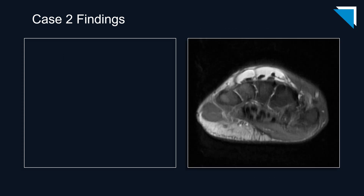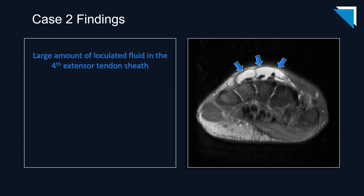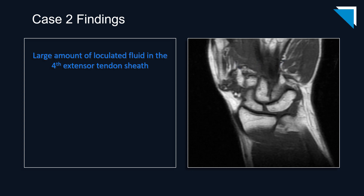Let's review our findings on this axial fluid-sensitive image. We have a large amount of loculated fluid in the fourth extensor tendon compartment, which likely accounts for the patient's palpable abnormality. This patient has quite a bit of significant degenerative change, particularly at the base of the thumb. So who could blame you for missing this incidental finding?